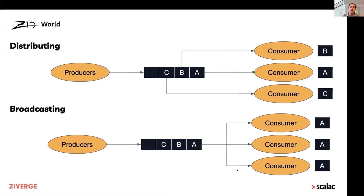The motivation for this work was that a ZIO user said: 'I love ZIO and ZIO Stream, I want to rip out my existing solution and use this 100%. But the reason I can't is because there's this topic-like structure that you don't have.' We never want our users to be in a situation where they have to use another library because we don't have a solution for something within our domain. So we went back and thought about how to do this, and how to do it the right way.